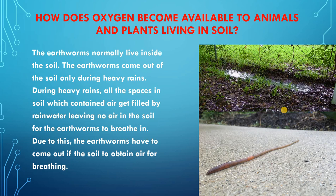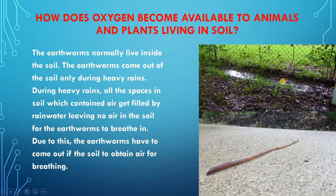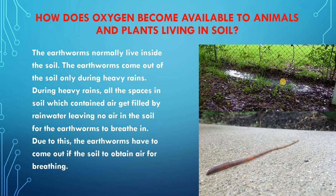Sometimes what happens when it rains heavily — here you can see when it rains heavily, all the spaces occupied by air in the soil get filled with water. With continuous rain, it is getting filled with water. Whenever it gets filled with water, no air is left in the soil. So in such a situation, the animals living inside the soil have to come out of the soil to obtain air for breathing and respiration.